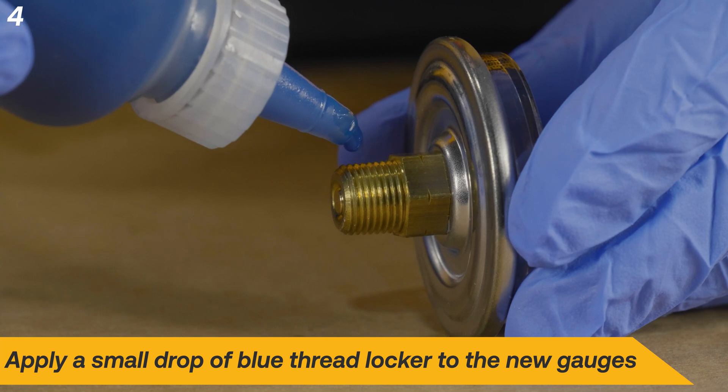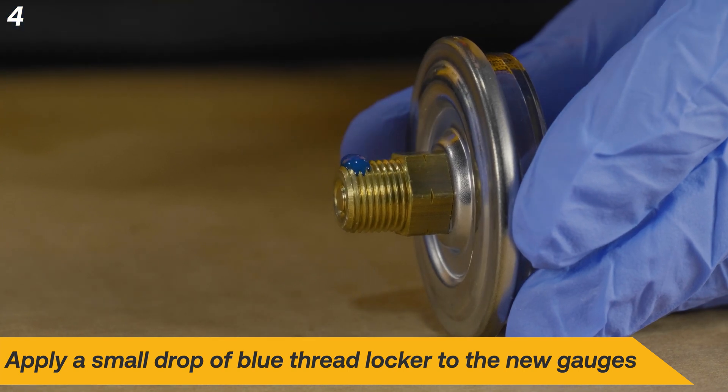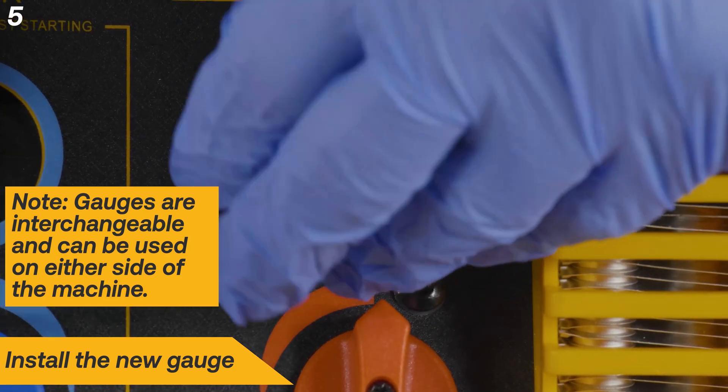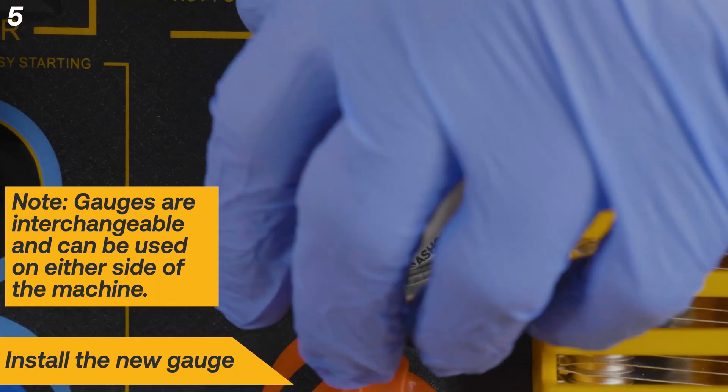Apply a small drop of threadlocker to the new gauge. Screw the new gauge onto the machine. The gauges are interchangeable and can be used on either side of the machine.